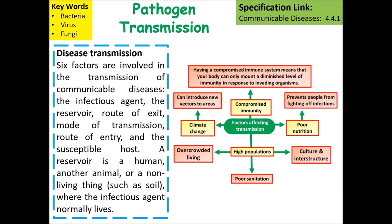There are six main factors that affect the transmission of diseases. Key factors include high population density and overcrowding, poor sanitation, poor nutrition — which can lower the immune system — compromised immunity in individuals, and climate change, where a changing climate allows new vectors to enter and survive in previously unsuitable areas.